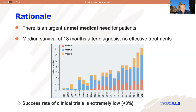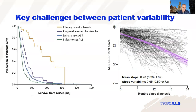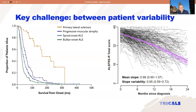The issue remains that the success rate of clinical trials in ALS remains extremely low. The main reason for this is that the disease is very heterogeneous — there is very much variability between patients.